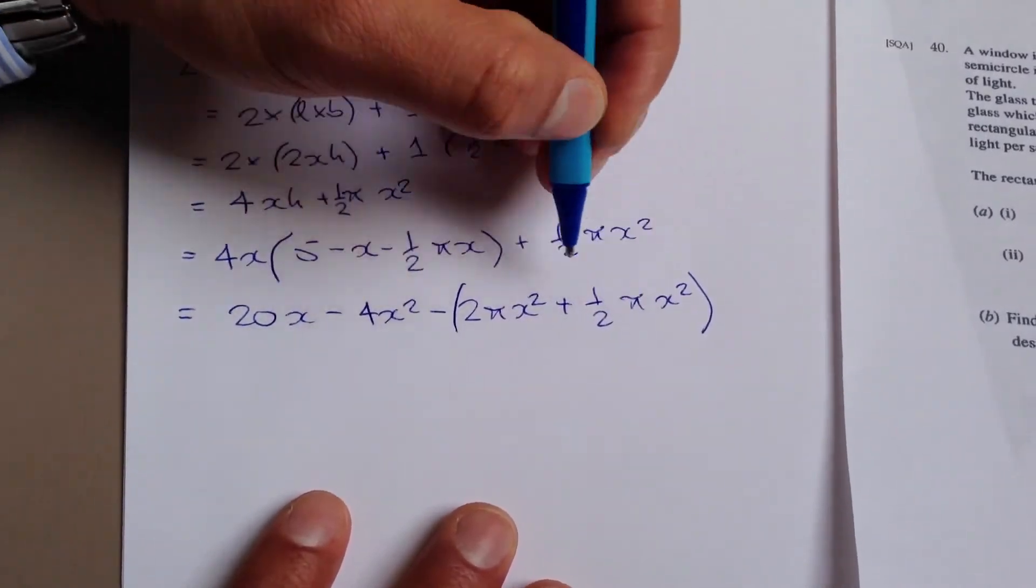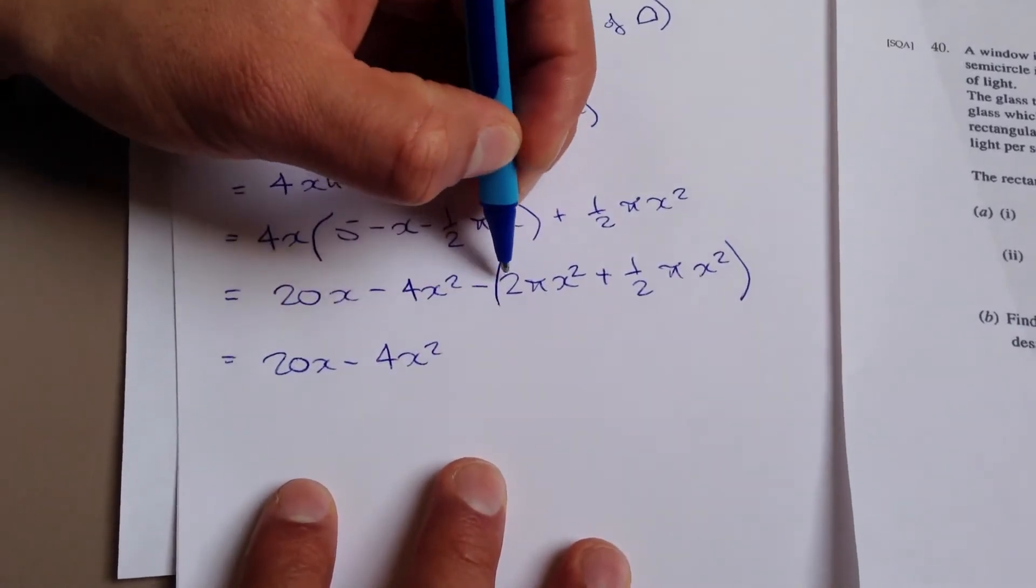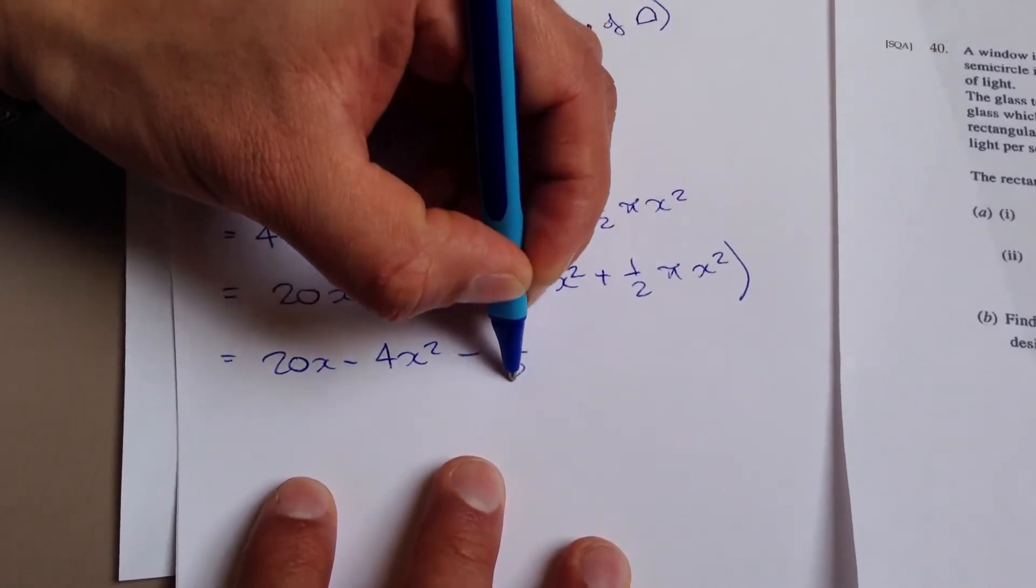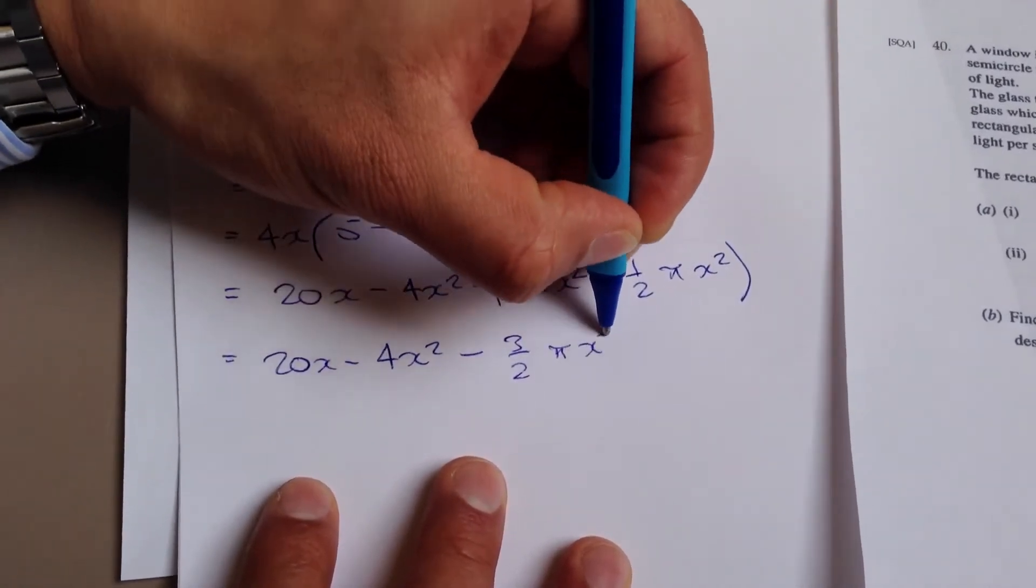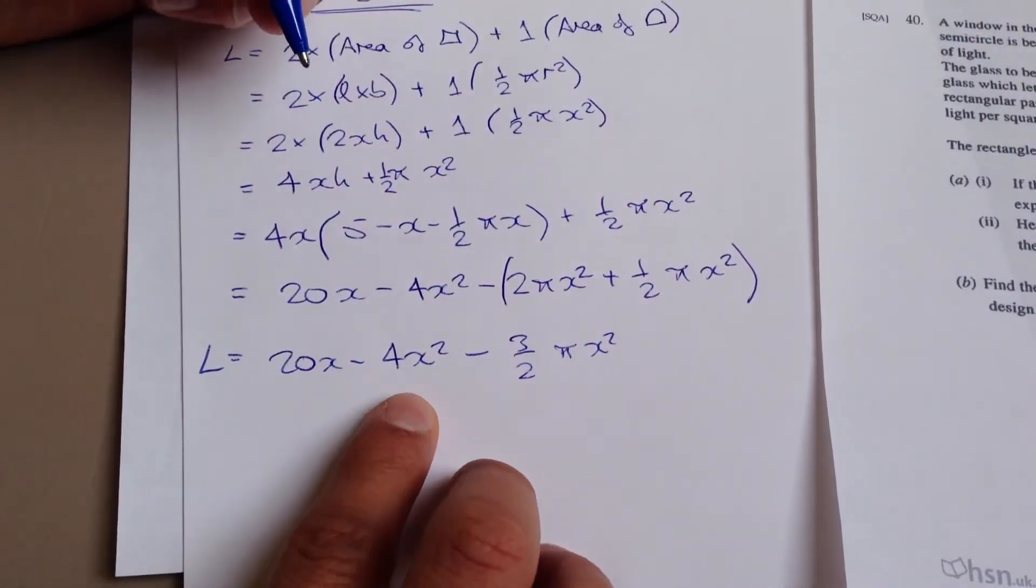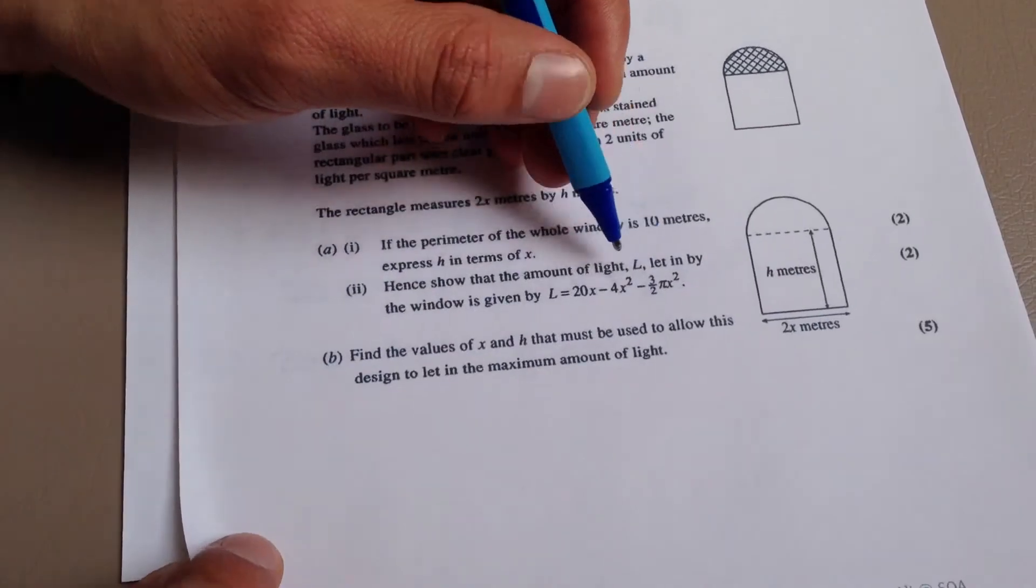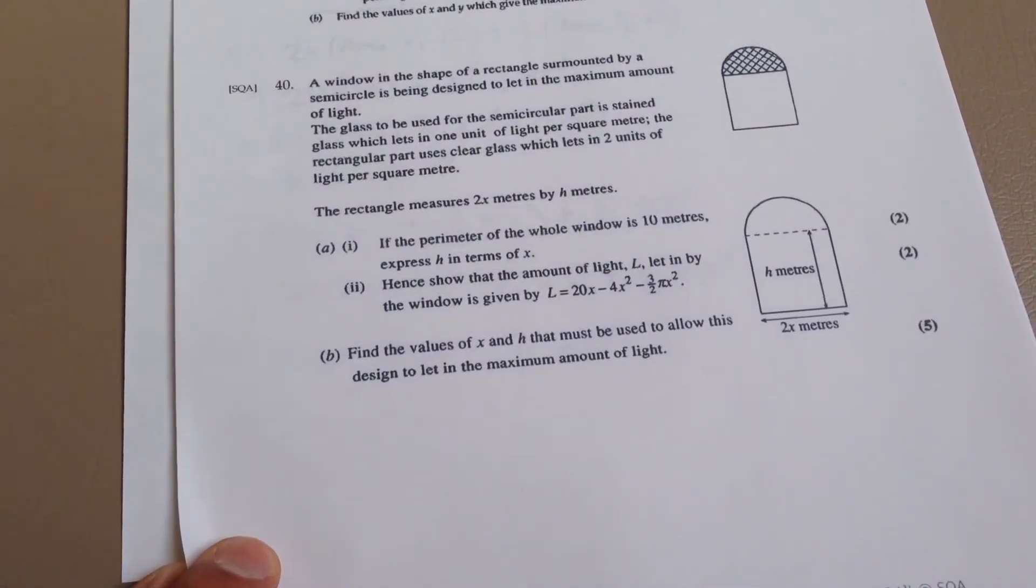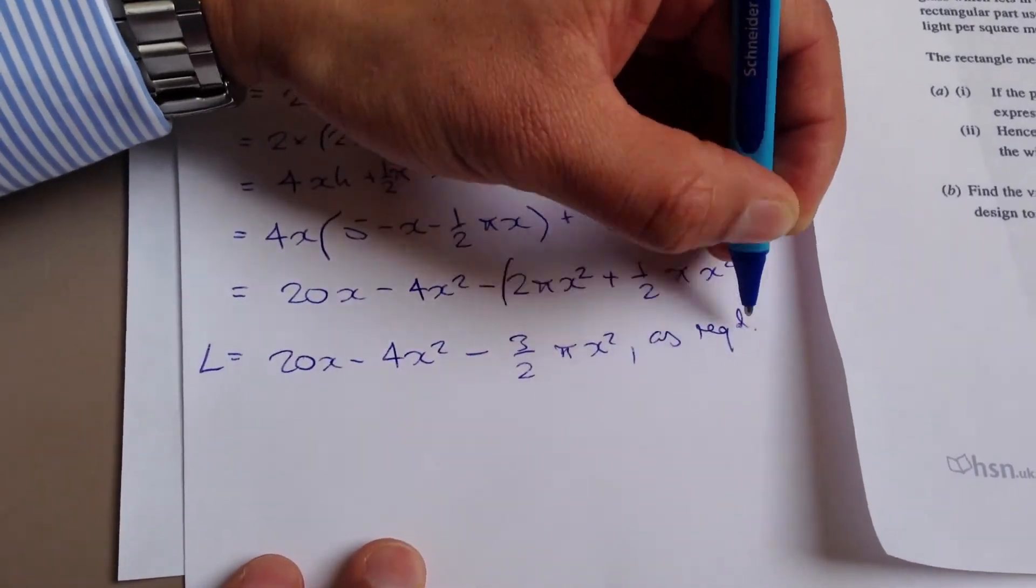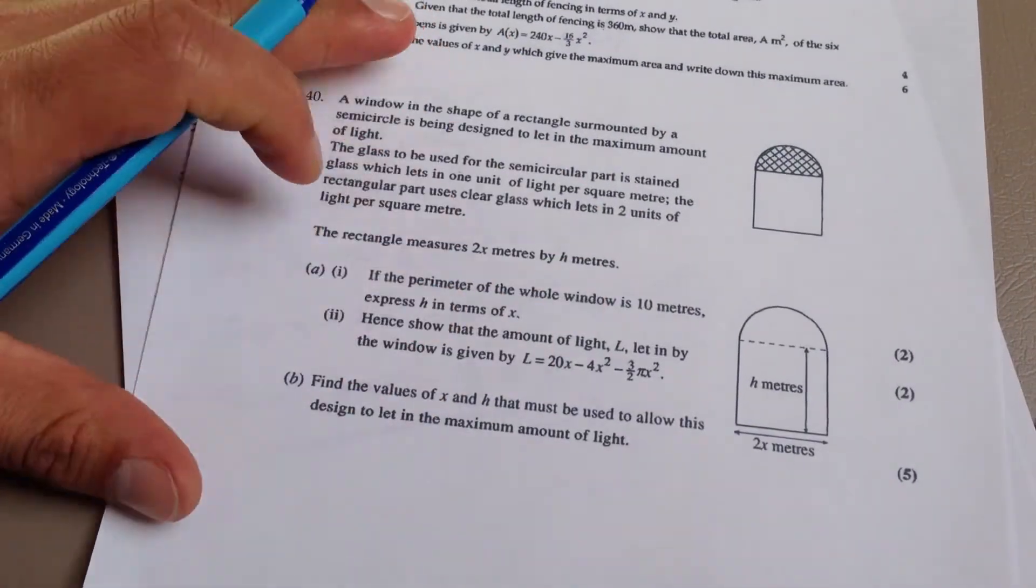These two things can actually come together and tidy up. So we've got our 20x minus 4x squared. And I've got minus 2 pi x squared plus a half pi x squared. It's going to leave me with minus 3 halves of pi x squared. Which is, so that's 20x minus, well, l equals 20x minus 4 pi x squared minus 3 halves pi x squared. And that is exactly what they were looking for. 20x minus 4x squared minus 3 halves pi x squared. So I'll just put as required. Lovely. So that's that part done. That was effectively 2 marks there, so 4 marks in total.